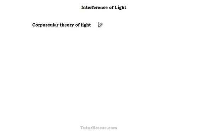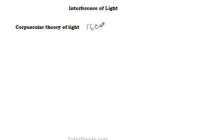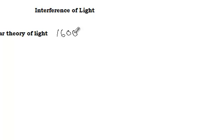Today we'll talk about the interference of light. In about 1600, Newton proposed that light is made up of particles, and his theory was called the corpuscular theory of light. According to this, light is made up of corpuscles or particles which are emitted from luminous objects. Owing to Newton's authority at that time, everyone accepted his corpuscular theory.